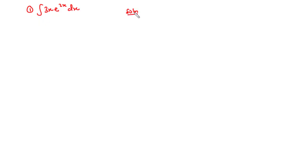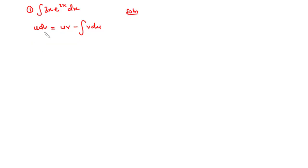In solving this using integration by parts, we are going to use the formula: u times dv equals u times v minus the integral of v du. To solve this we need to assign some expression to u and another to dv. The expression equal to u should easily become a constant after successive differentiation, and the expression equal to dv should be easily integrated from standard integrals.